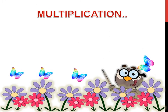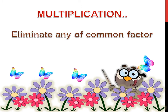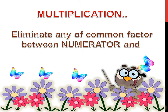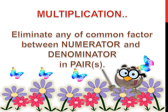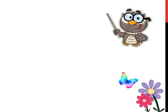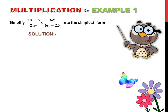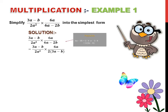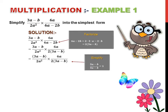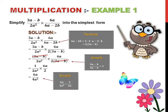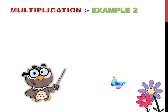Multiplication: eliminate any common factor between the numerator and denominator in pairs. Multiplication Example 1. Multiplication Example 2.